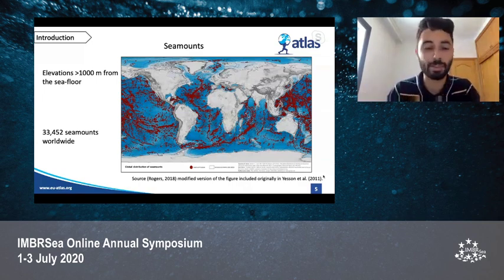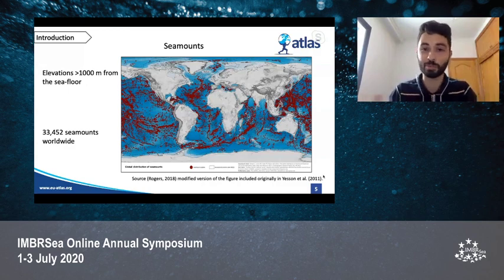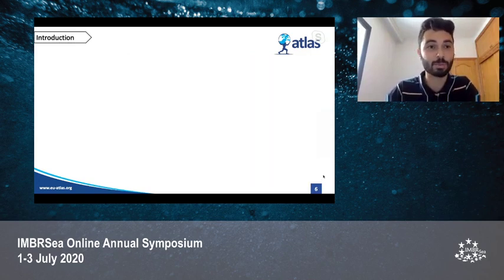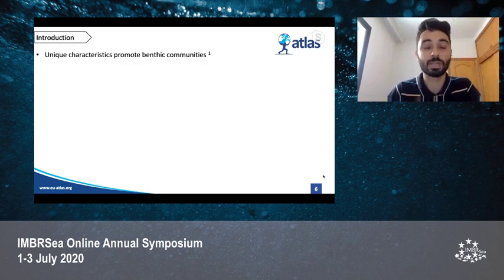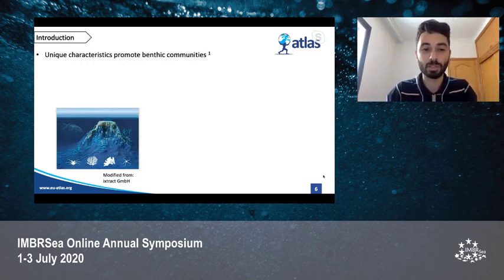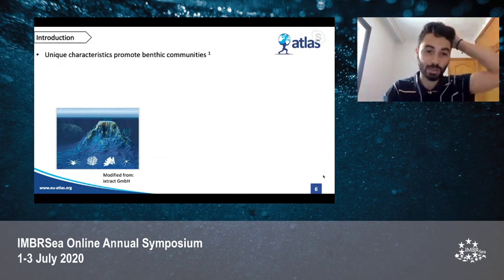The seafloor is full of different habitats and topographical features, one of them being seamounts — elevations higher than a thousand meters from the seafloor without reaching the surface, because otherwise they would be islands. The best estimates calculate around 33,452 seamounts worldwide. These are very interesting because they interact with ocean circulation, which promotes benthic communities, mainly sponges and corals, which are ecosystem engineers that attract crustaceans, echinoderms, and fish.